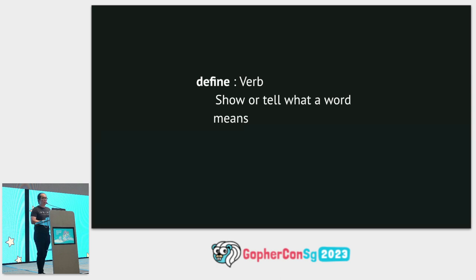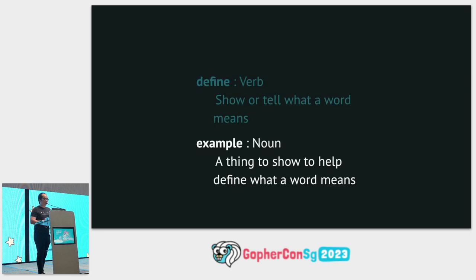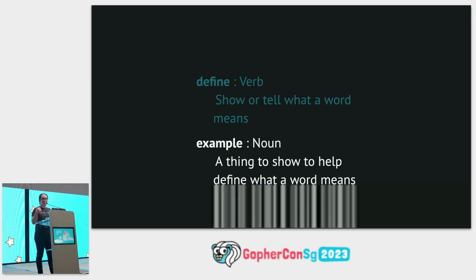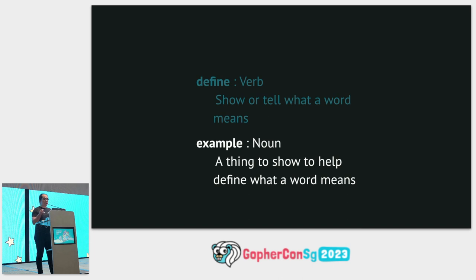What I just did was to define the words hand, book, pen, read, write, speak. Example is a noun. An example means a thing to show, to help define what a word means. What I just did earlier was to define those words with the help of examples.